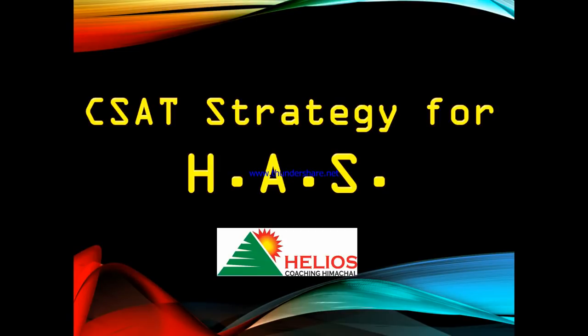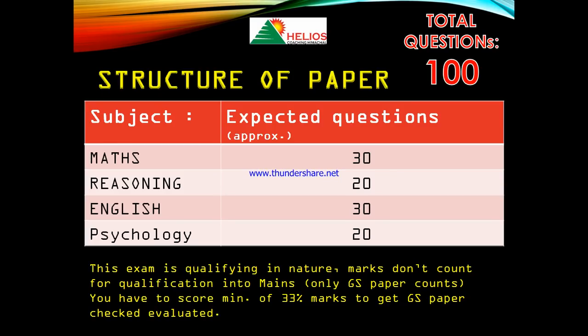Hello everyone. Today we will discuss the strategy of CSAT for your HGS examination. First, we will look into the structure of the paper. Generally your paper includes 100 questions: Maths has around 30 questions, Reasoning is 20 questions, English is 30 questions, and Psychology is 20 questions.